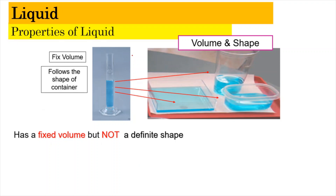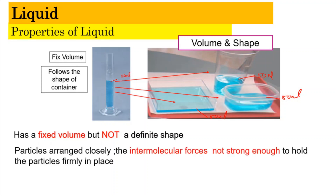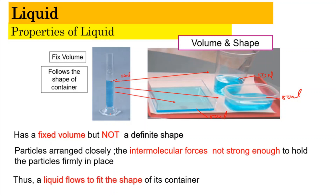The properties of liquid: liquid has a fixed volume but not a definite shape. If we measure 50 ml of a solution in a measuring cylinder and place it into three different containers, the volume remains fixed in all situations. However, the liquid will follow the shape of its container. This is because the particles inside the liquid are arranged closely but not as close together as in solid, and their intermolecular forces are not strong enough to hold the particles firmly in place, giving liquid particles the flexibility to flow and fit the shape of their container.